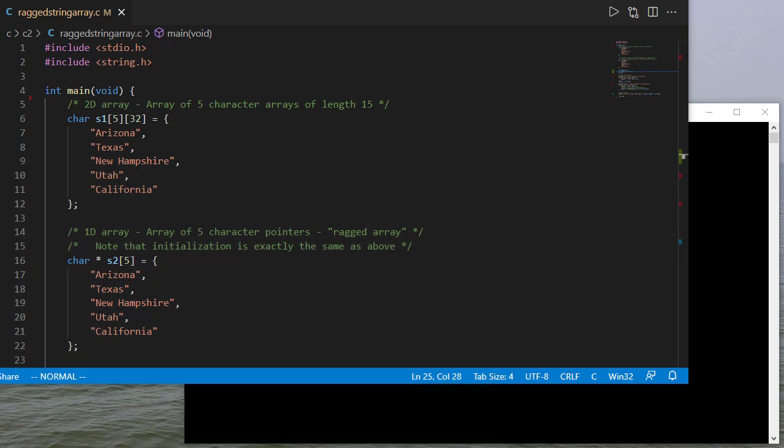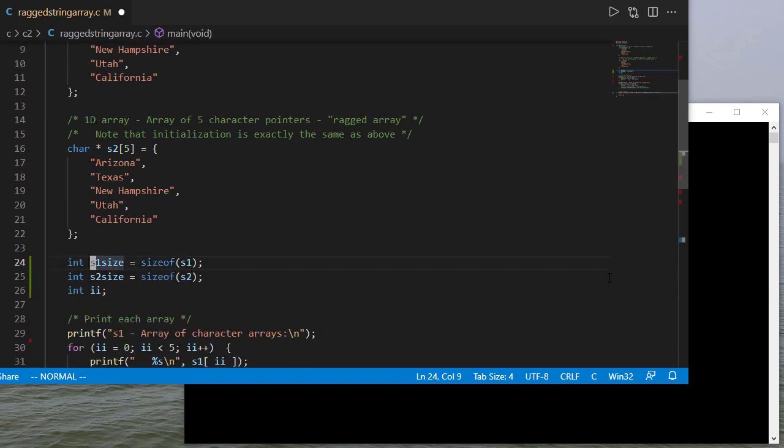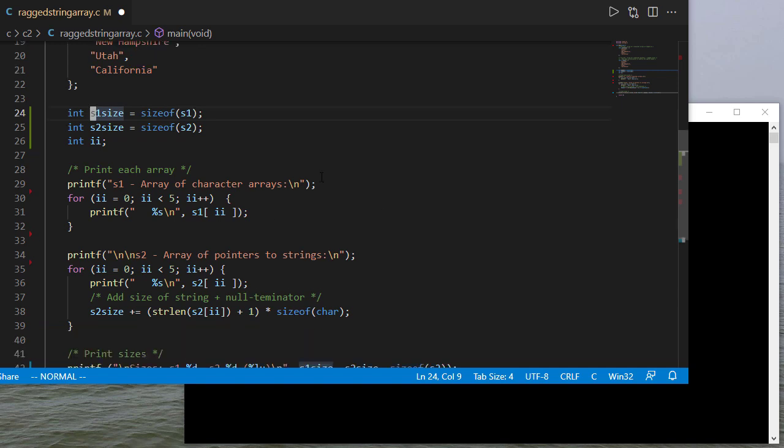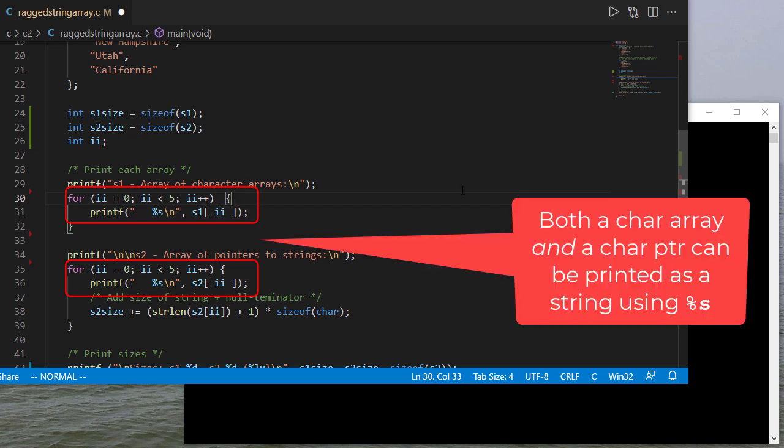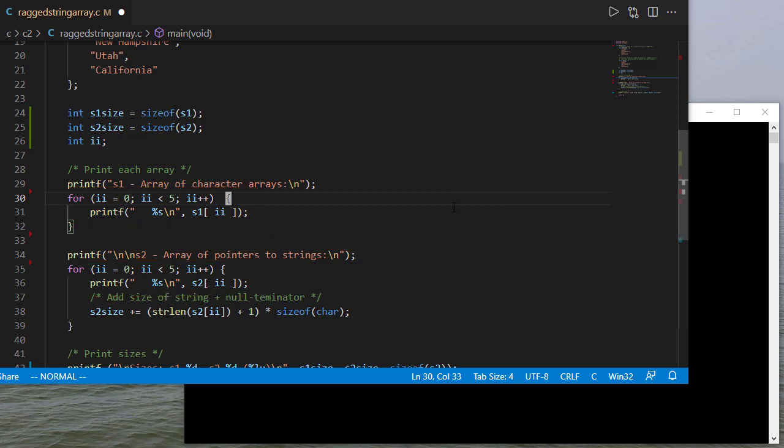So now let's take a look at this in code. So in my code, I've declared the two arrays. S1 is an array of five 32-character arrays. And S2 is an array of five character pointers. Notice the actual initializer is the same in both cases. Then I have some variables to keep track of the size of the arrays and an index variable. So I print out the strings. And notice I'm printing each out the same way. I go through all five indices of the array and print out what's there as a string. But one difference is I already have the size of the arrays.